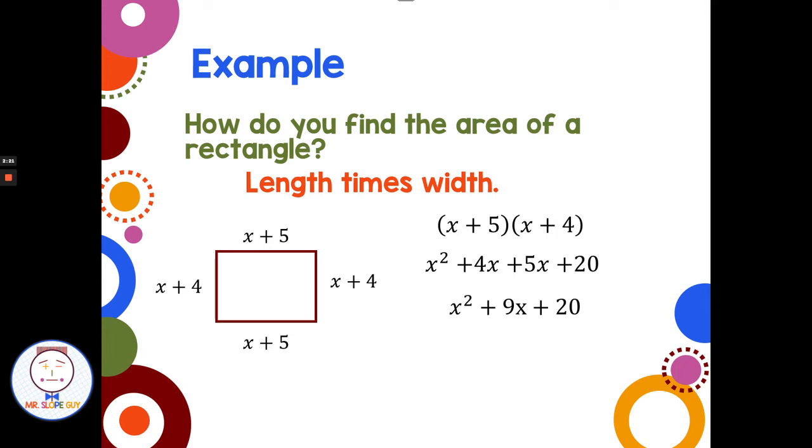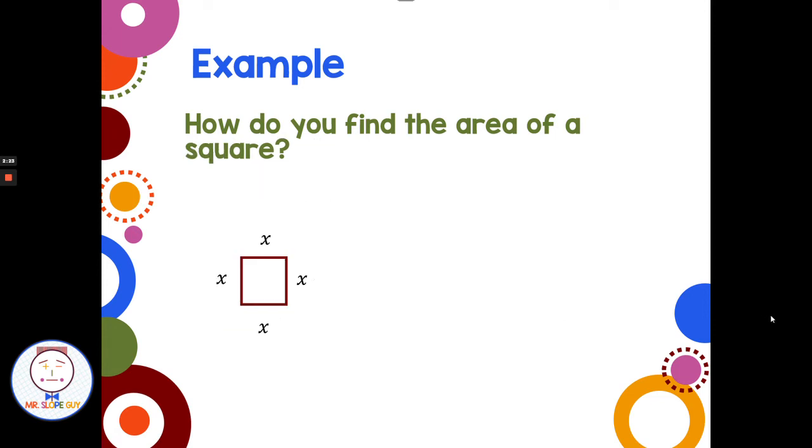Moving right along. New example: How do I find the area of a square? I notice it's a square because all the sides are the same, they're all x. How do I find the area of a square? I could do length times width, or I could just do a side squared.